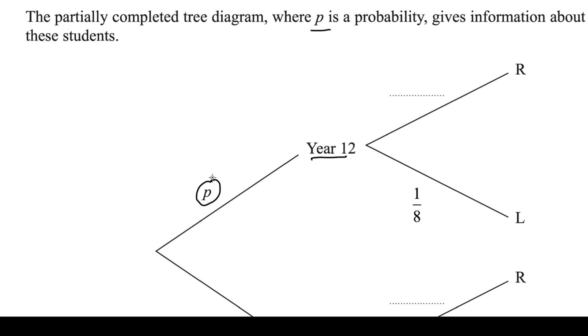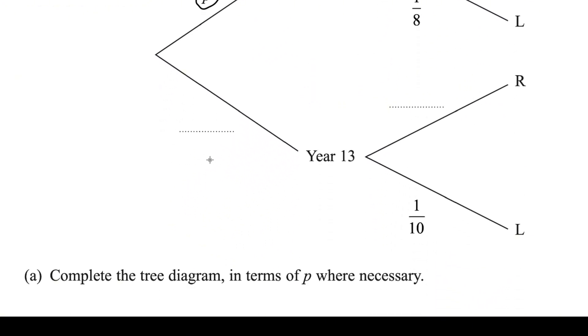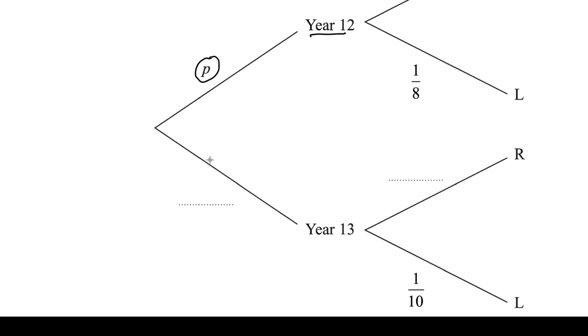You know that the overall probability is always 1. If one probability is given, you can find the other by subtracting it from 1. So P is the probability for Year 12 students, and the probability for Year 13 students will be 1 minus P.